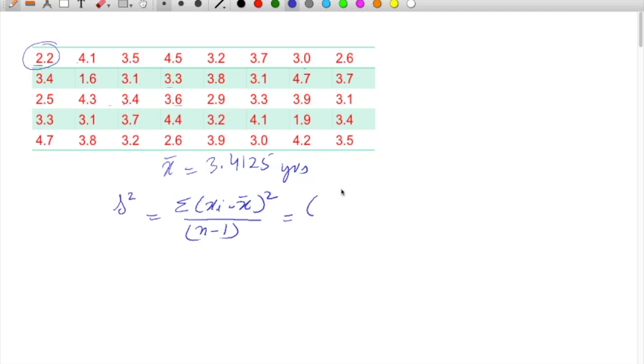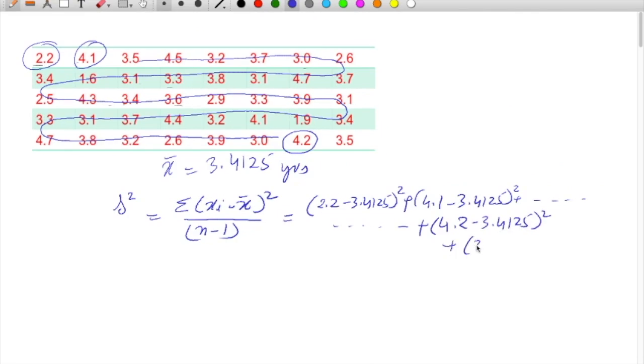Pick up this value 2.2 minus 3.4125 squared, plus pick the next one 4.1 minus 3.4125 squared, and so on keep on moving. Then we can have plus the last value 3.5 minus 3.4125 squared.